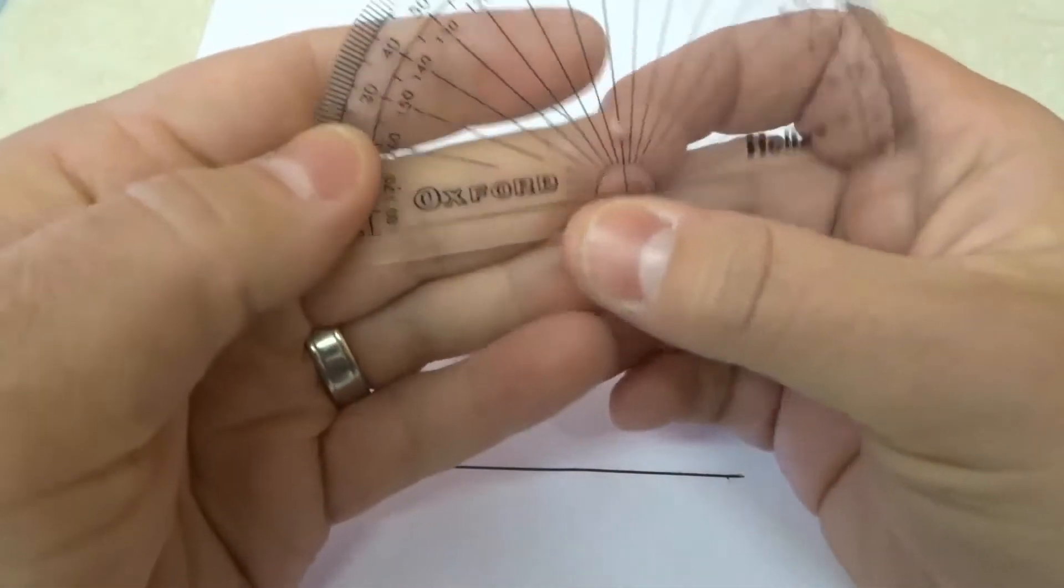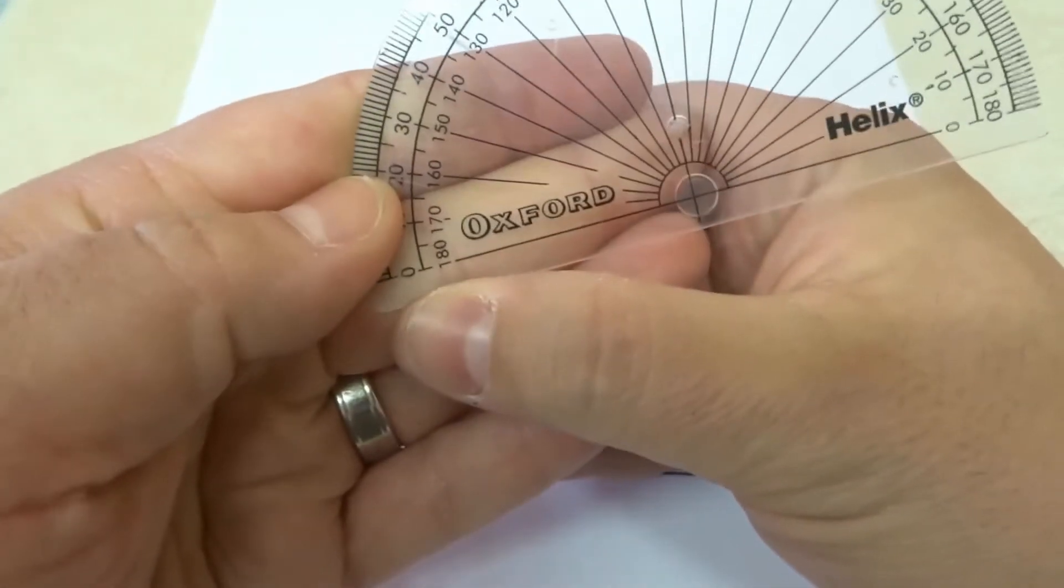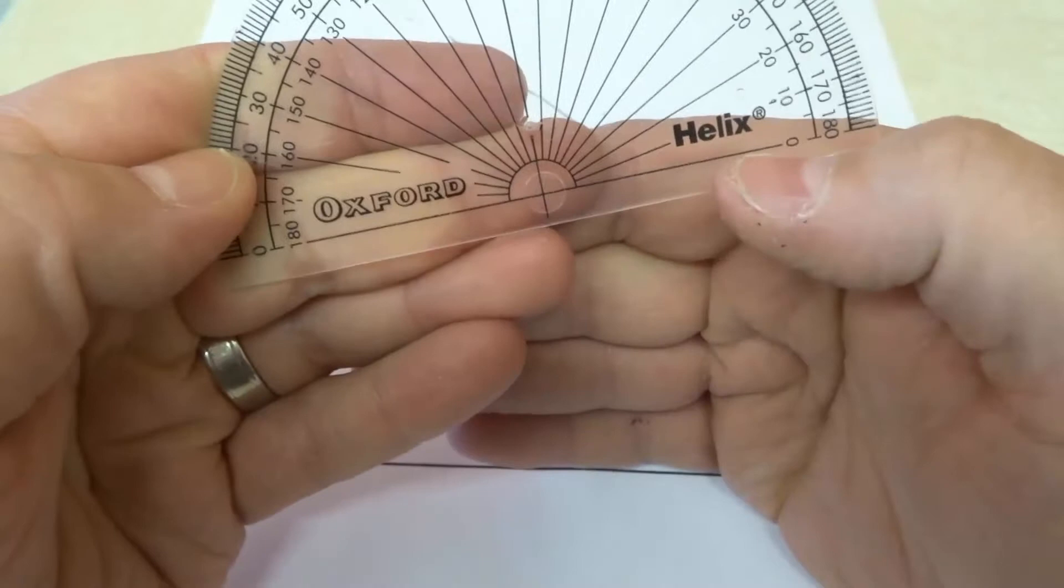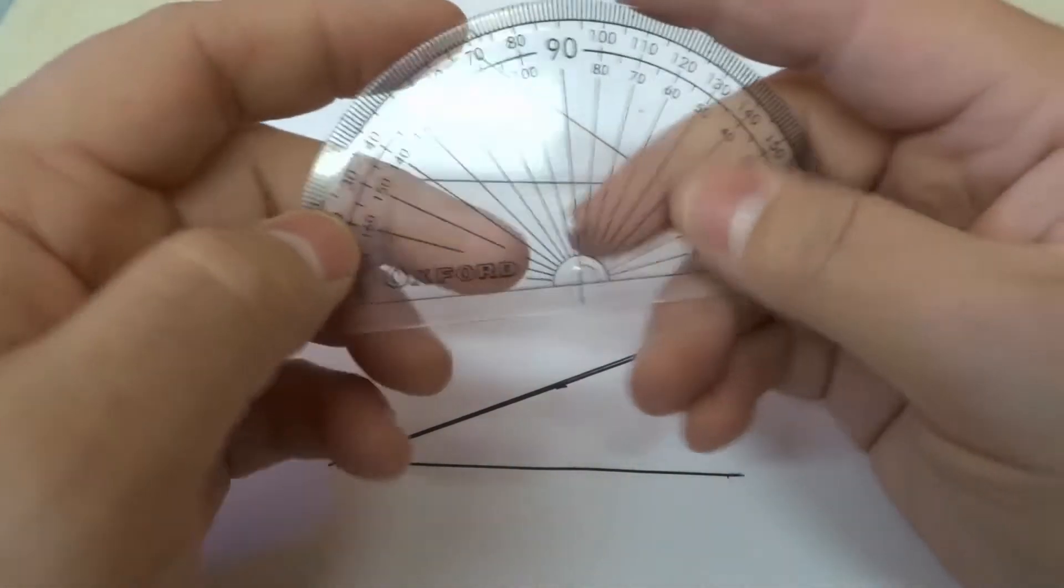So first let's take a look at the protractor. You can see right here we have a line at the bottom. This line at the bottom that coincides with the zeros on each side, that lines up with the bottom line of the angle or the first line that you're going to measure on the angle.